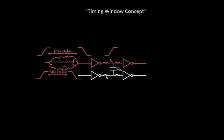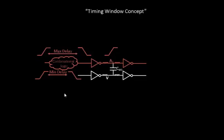If you do the analysis at min delay and max delay, things are pretty simple, because now we know that the delay variation due to process variation will be in this range — minimum delay will be this much and maximum delay will be this much. So if we try to do an analysis based on this, then the analysis is basically a conservative analysis.